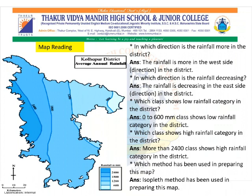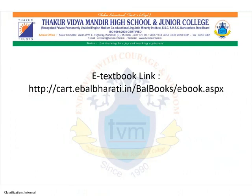Which class shows the high rainfall category in the district? The shade is darker where the value is more, so more than 2,400 mm class shows the high rainfall category in the district. Which method has been used in preparing the map? The method used in preparing the map is called the isopleth method. Students, we have studied the dot method, choropleth method, and isopleth method. Thank you.